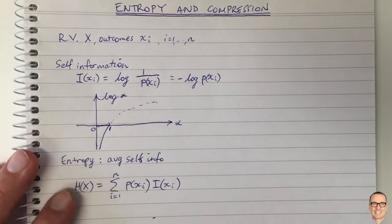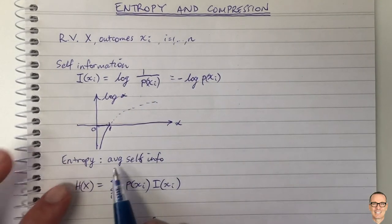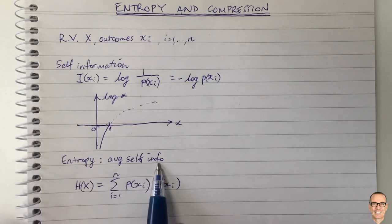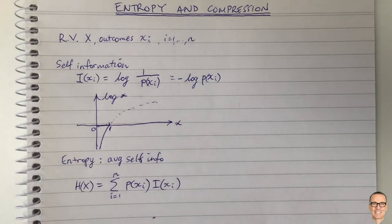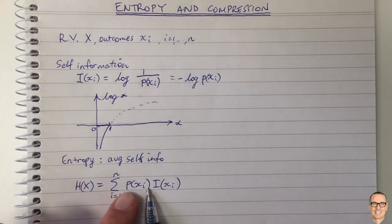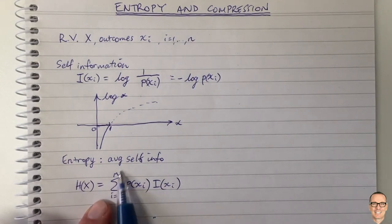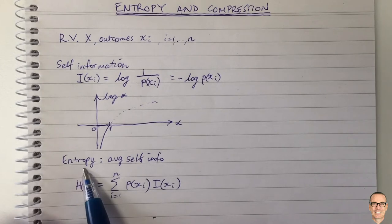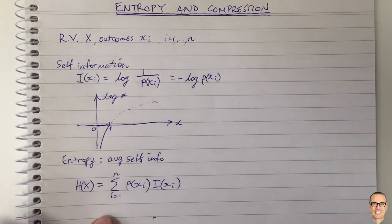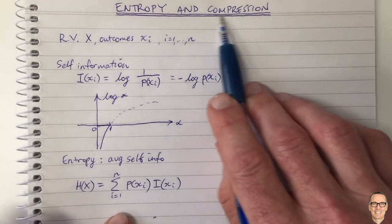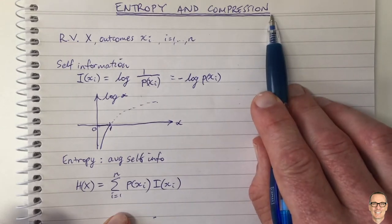There's also a concept of entropy and entropy is simply the average of the self information. So that's here, take the self information, multiply by its probability and add them all up. This is the entropy. Okay now what do these things mean? What are some examples of these things and how do they help us to do compression?